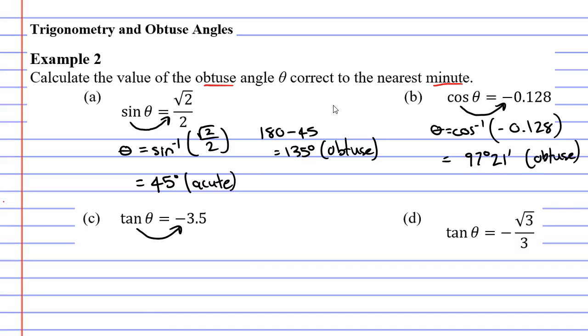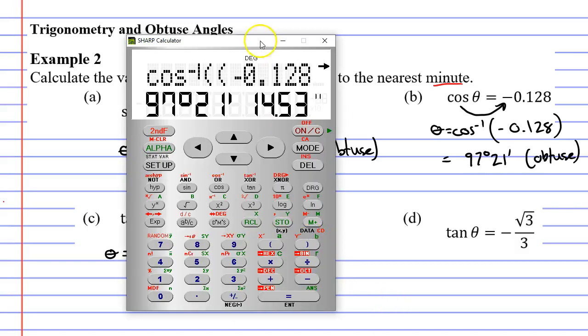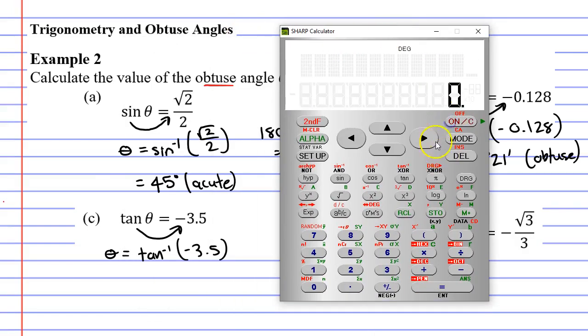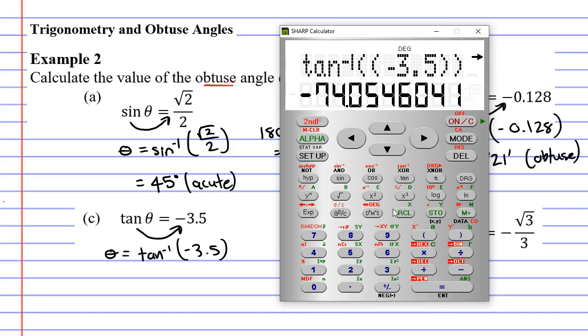Once again, bringing tan to the other side. Theta equals tan inverse, or tan to the negative 1, of negative 3.5 this time. Bringing up our calculator. Second function tan, bracket, negative 3.5, close our brackets, equals.